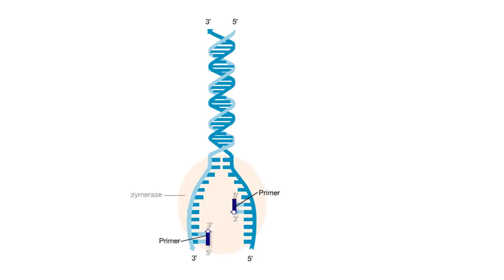New DNA strands are built as the enzyme DNA polymerase adds free nucleotides to the ends of the primers. Note how the new strands are built in opposite directions. The reason is that DNA polymerase can only synthesize DNA in one direction, from the 5' end to the 3' end.